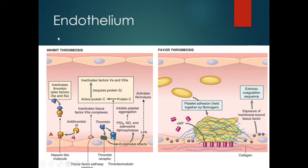There are also factors which favor thrombosis. Endothelial injury causes exposure of collagen molecules; when collagen molecules bind to the platelet surface, it causes platelet aggregation and formation of a clot — we call this thrombus formation. There are also membrane-bound tissue factors that can activate the extrinsic coagulation pathway.